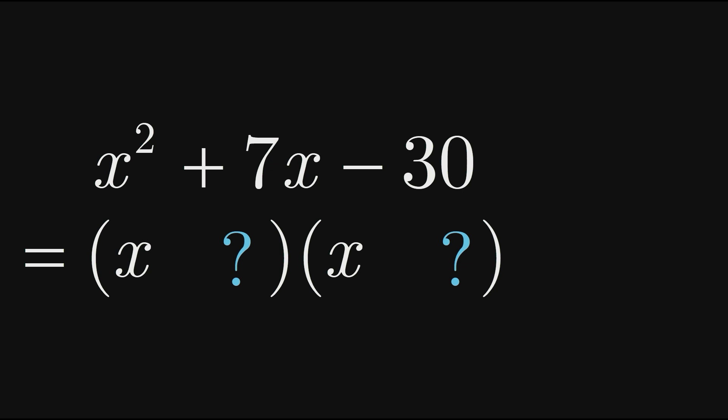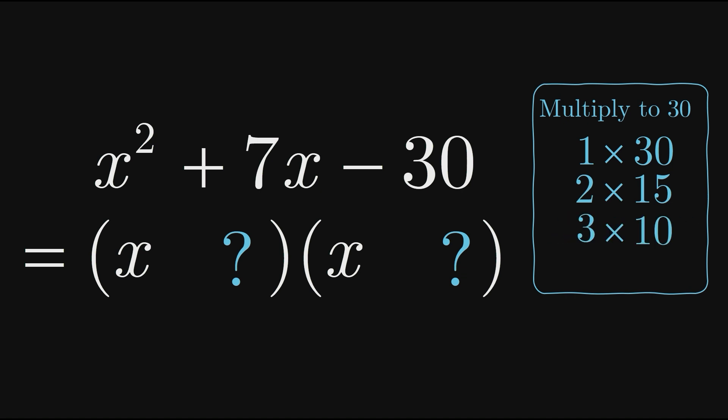Let's start by thinking about whole numbers that multiply to 30 instead of negative 30. We have 1 and 30, 2 and 15, 3 and 10, and 5 and 6.